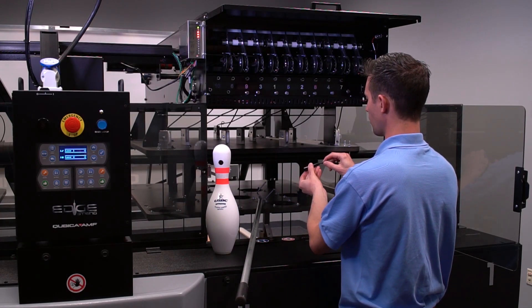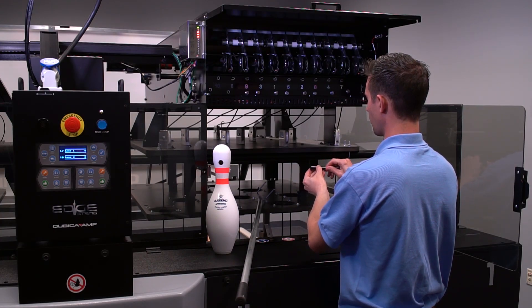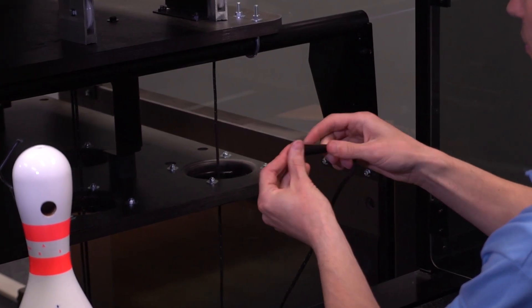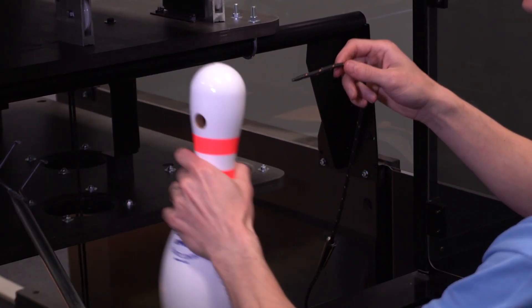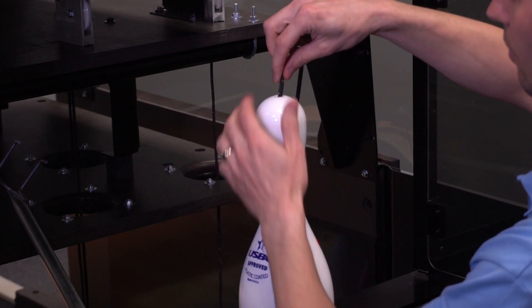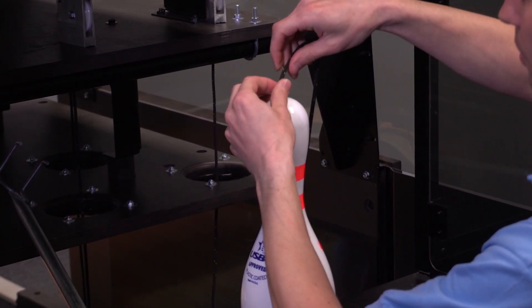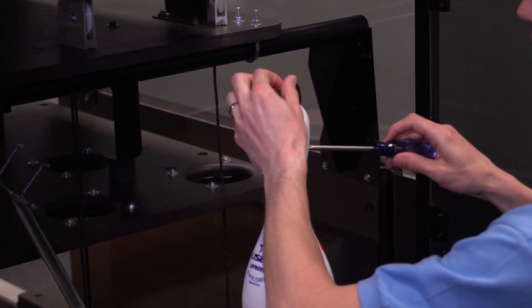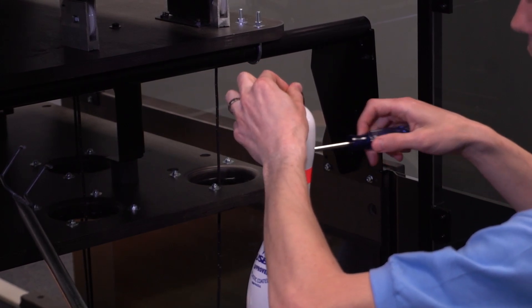Pass the other end of the string through the pin bushing. Pass the string through the hole in the top of the pin. Then pull the string out through the large hole on the side of the pin.